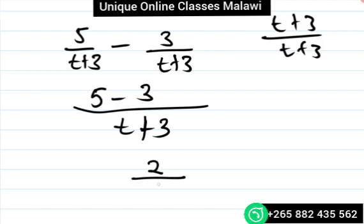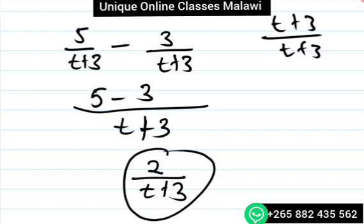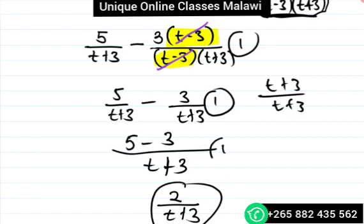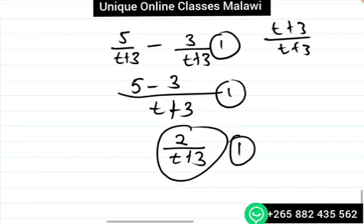So we have 2 over t plus 3 as our answer. That's how we do questions like this. You will notice some more videos in my YouTube channel where I was doing algebraic fractions and you see some techniques.